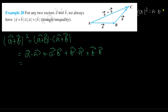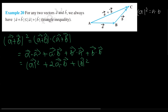Using the same property, I can write a · a as |a|². You know that a · b and b · a are commutative — that means dot products are equal, a · b is the same as b · a. So I can write this as |a|² + 2(a · b) + |b|². Next, I'm going to replace this a · b.